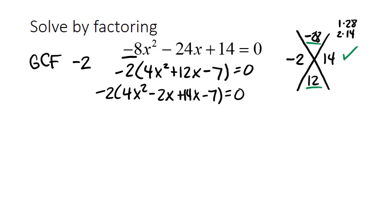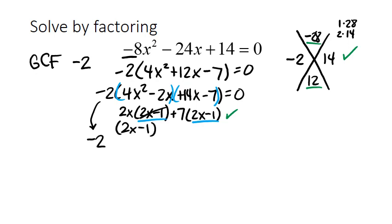I can now separate into grouping. And I'm actually going to just bring that negative 2 down here. I don't want to keep carrying it over. So let's take care of our GCF in the first set of parentheses would be 2x. The GCF in my second set of parentheses would be 7. Here's another checkpoint. I ended up with the same thing twice. Therefore, I'm good to go so far.